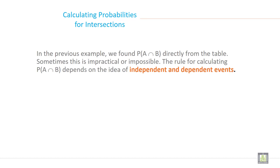In the previous example, we found probability of A intersection B directly from the table. Sometimes this is impractical or impossible. The rule for calculating probability of A intersection B depends on the idea of independent and dependent events.